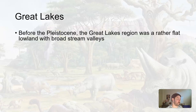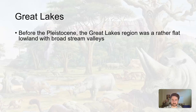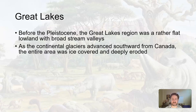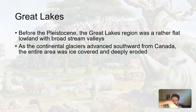Another outcome of the glaciation was the Great Lakes — the five Great Lakes. I'm from Cleveland; I used to live along the shores of Lake Erie. Before the Pleistocene, before all this glacial activity, the Great Lakes region was more just a flat, sediment-deposited, broad plain. There were some streams, but there were no lakes. As these massive two-mile-thick continental glaciers moved southward from Canada covering the area, those glaciers carved deep gouges into the crust, into the lithosphere.